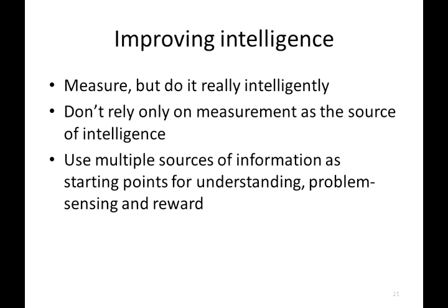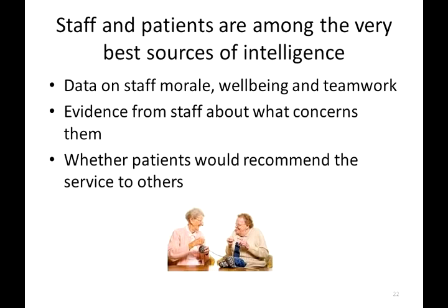If we're going to regulate well in healthcare, we need to use multiple sources of information as starting points for understanding, problem-sensing, and reward. Too often in healthcare we fail to reward people for the improvements they've made and the wonderful service they deliver to patients. What's clear is that we often neglect some of the very best sources of intelligence: staff and patients. There is a relationship between staff morale, well-being, teamwork, and the quality and safety of care. We need to ask staff about what concerns them and treat those concerns seriously. We also need to make good judgements about when to intervene and when to allow frontline staff to resolve problems themselves.